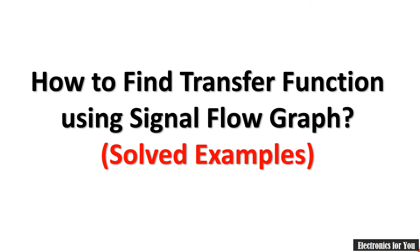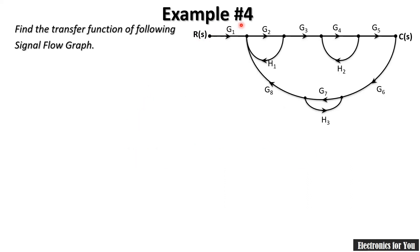Hello friends, welcome to YouTube channel Electronics For You. In this video I will explain how to solve an example of a signal flow graph to find the transfer function. This is example number 4. Previously I have made two videos regarding the signal flow graph where I explained each and every step using Mason's gain formula. Please watch those videos — the link is given in the description.